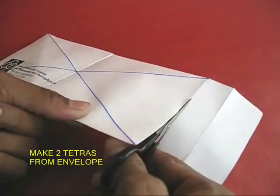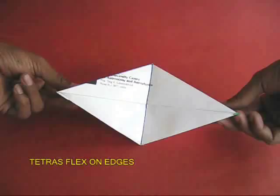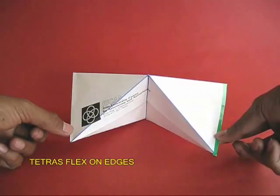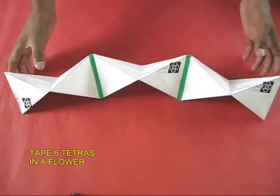Similarly, from the envelope, instead of one, you can fold two tetrahedrons. The procedure remains the same. Instead of one square, you take two squares. Because both these tetrahedrons are joined, they can flex about a common edge, which opens up many possibilities.